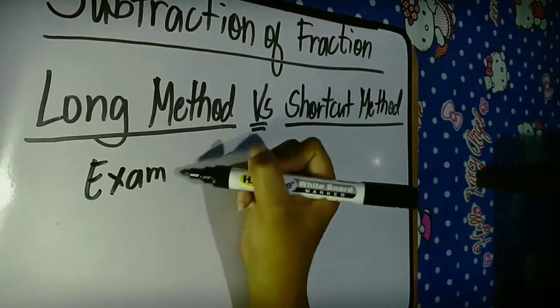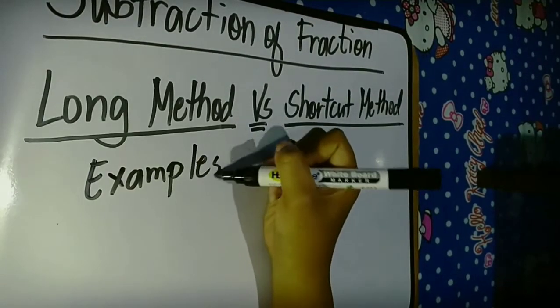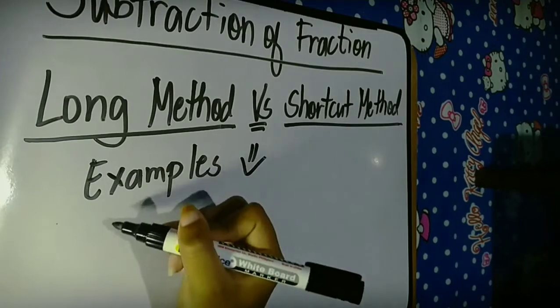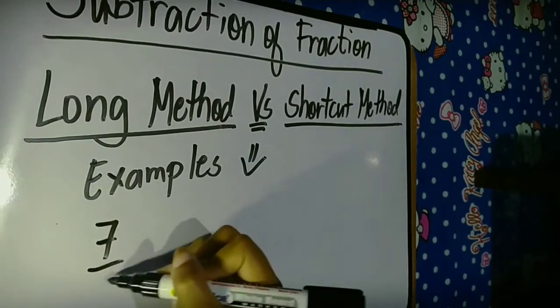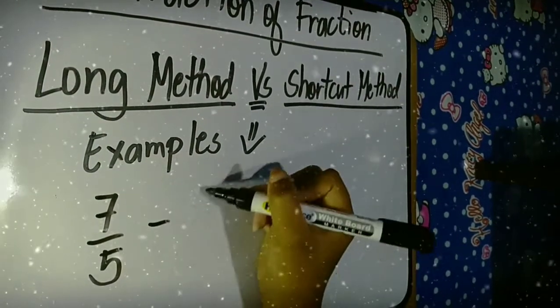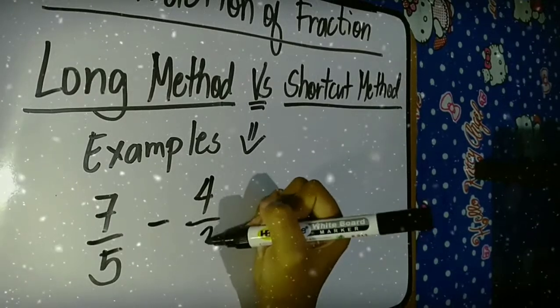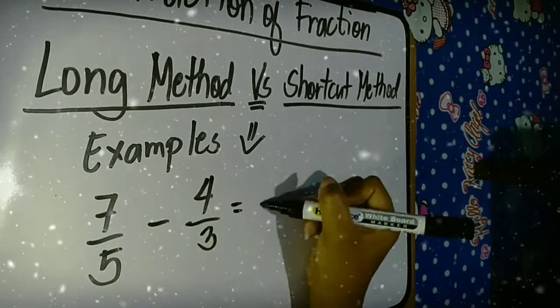And you will decide which method is the best. Let's have examples. 7 fifth or 7 over 5 minus 4 thirds or 4 over 3.